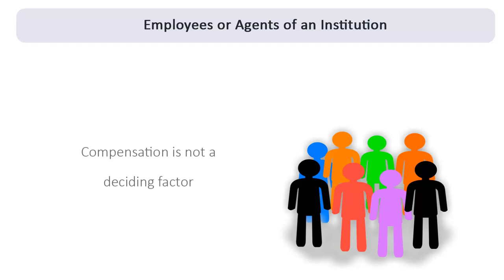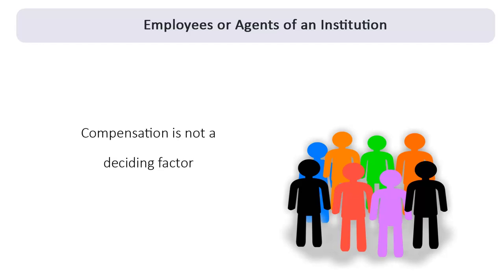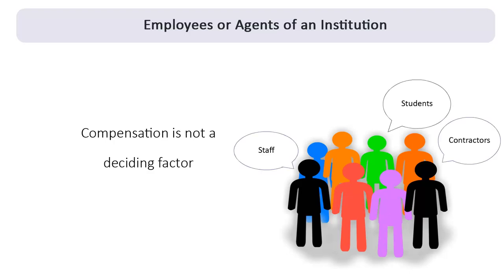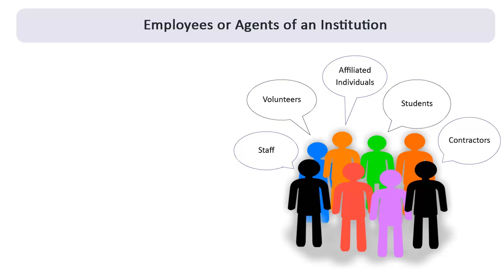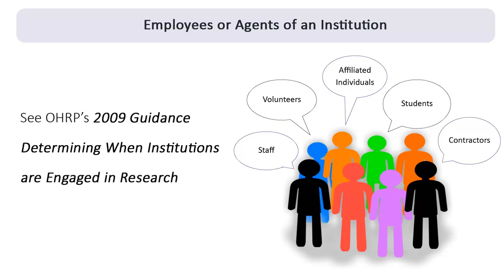Individuals do not have to receive compensation from the institution to be considered agents for purposes of engagement analysis. They can be staff, students, contractors, volunteers, or other affiliated individuals. For additional information about who qualifies as an employee or agent, check out OHRP's 2009 Guidance Determining When Institutions Are Engaged in Research.